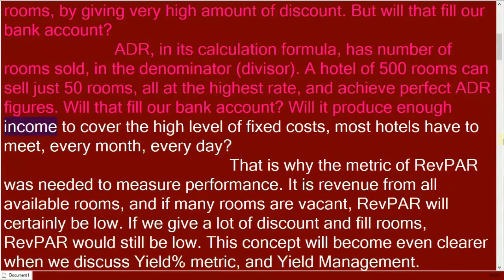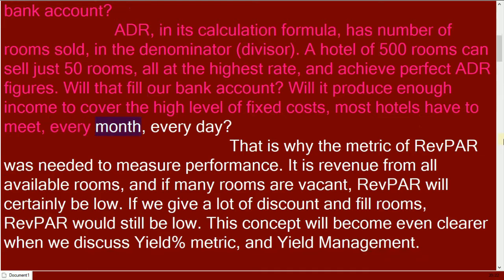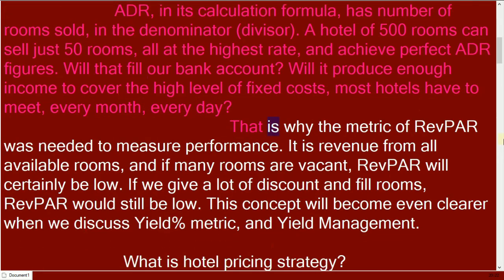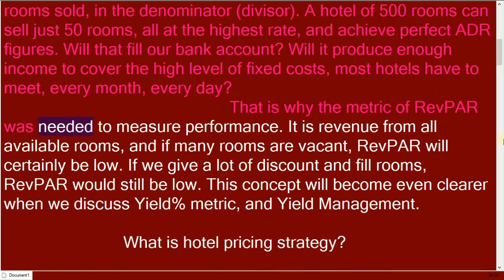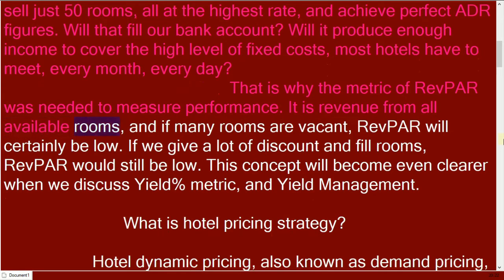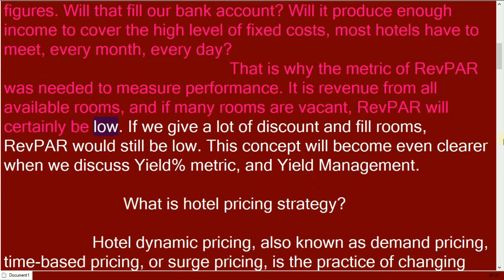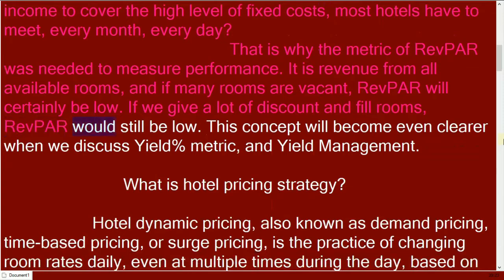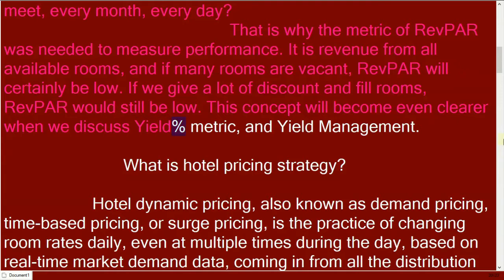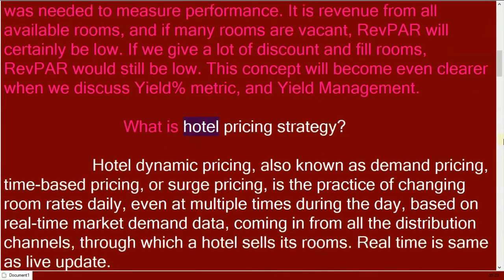Will it produce enough income to cover the high level of fixed costs most hotels have to meet every month, every day? That is why the metric of REVPAR was needed to measure performance. It is revenue from all available rooms, and if many rooms are vacant, REVPAR will certainly be low. If we give a lot of discount and fill rooms, REVPAR would still be low. This concept will become even clearer when we discuss the yield percent metric and yield management.